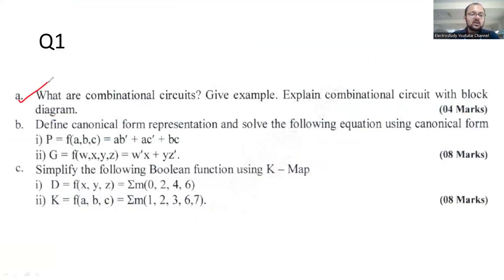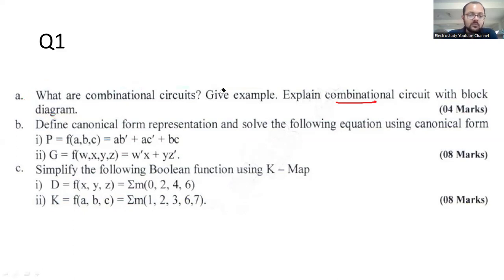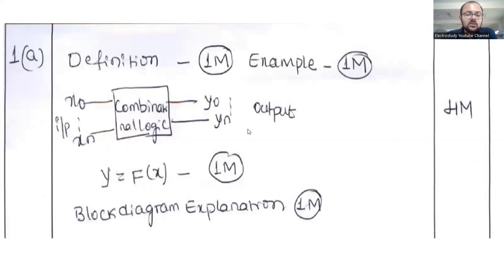First question: what are the combinational circuits? In a combinational circuit, normal gates like adders and subtractors are generally called combinational circuits. Give some examples — half adder, full adder — and explain the combinational circuit with a block diagram. Sequential circuits include flip-flops, latches, counters, and Johnson counters.